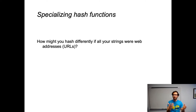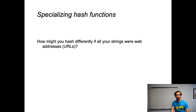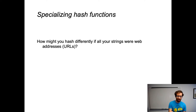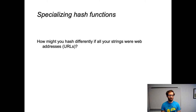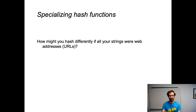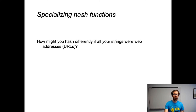We might also sometimes think about specializing our hash functions. Instead of a hash function for all possible strings, we just want one for a particular kind of string, like web addresses or URLs. We might notice that URLs have a lot of shared characters — HTTP, colon, slashes — that don't carry useful information about what's different between web addresses. So we might take different parts of the URL and handle those differently, generating some number for each part and combining them in order to specialize the hash function, such that different web addresses can efficiently be turned into distinct integers.